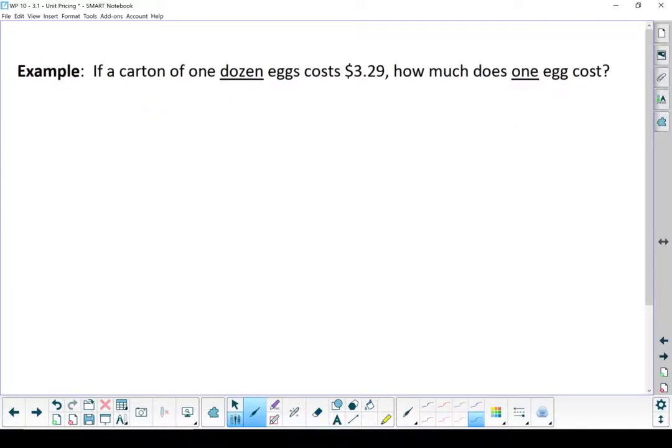So here's a question. If a dozen eggs cost $3.29, how much does one egg cost? Our basic formula is total cost divided by the amount that you're getting, and that gives you your unit cost.